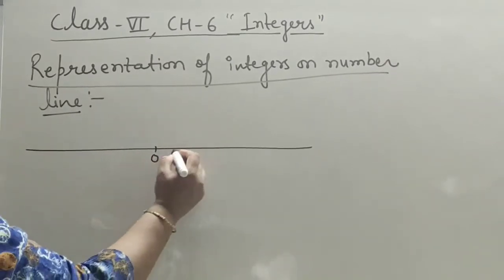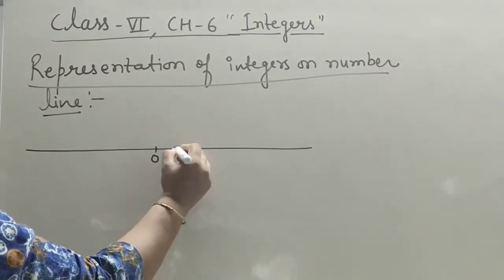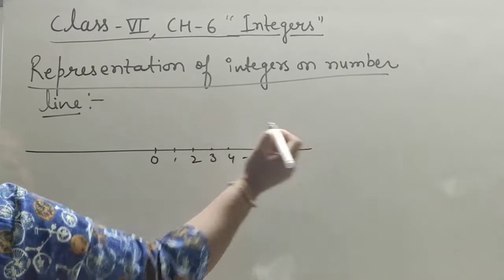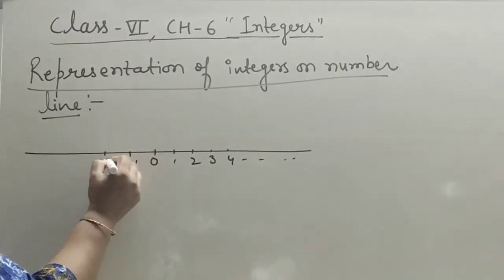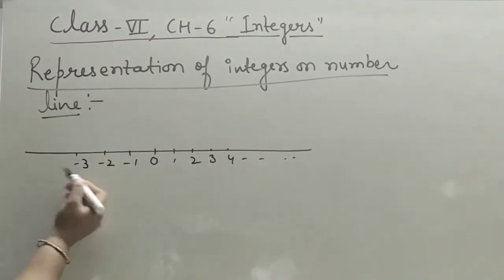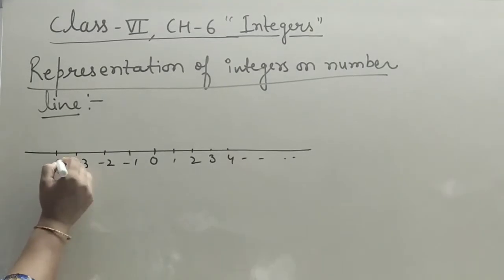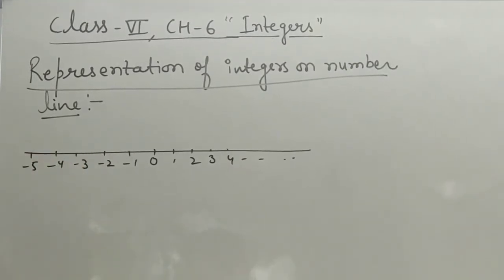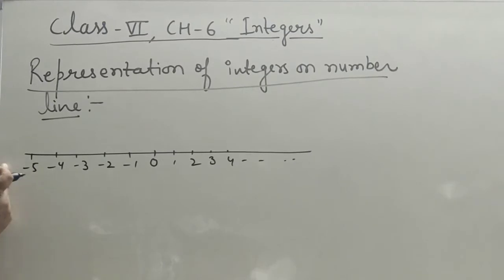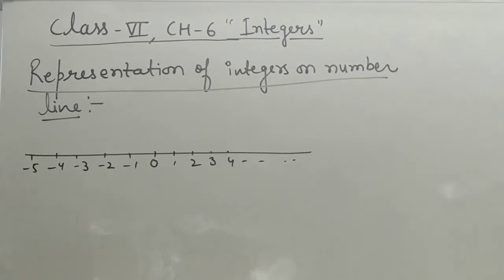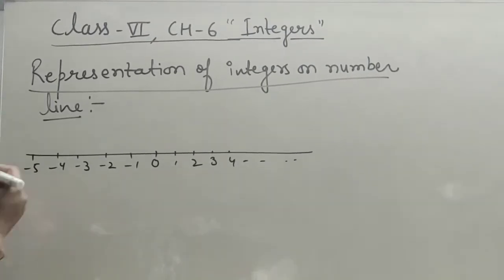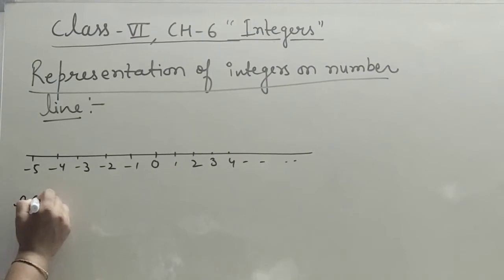It is a number line. Zero is in the middle. On the right side, all positive numbers go up to positive infinite, and on the left side we represent all negative numbers: minus one, minus two, minus three, minus four, minus five, up to minus infinite.